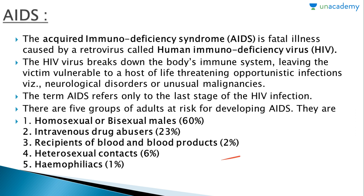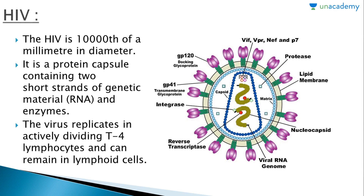The five at-risk groups also include recipients of blood and blood products, heterosexual contacts, and hemophiliacs. This explains the ways through which this disease spreads — that is, through unusual sexual contacts, using needles of an infected person in drug abuse, through blood products, or any casual heterosexual contacts. Moving forward, the HIV is a ten-thousandth of a millimeter in diameter.